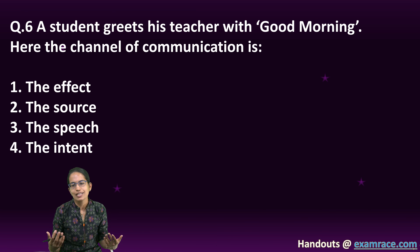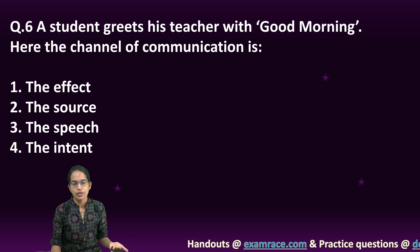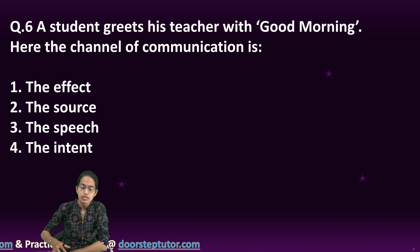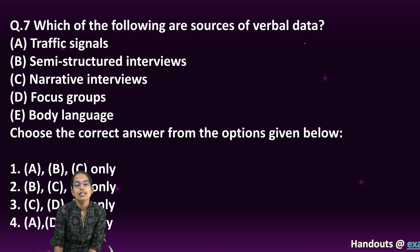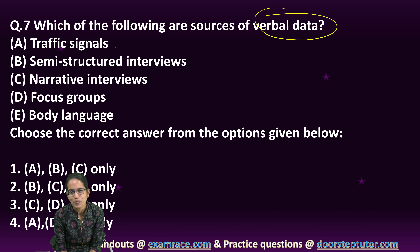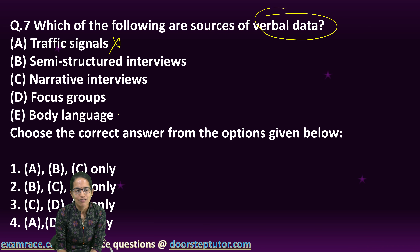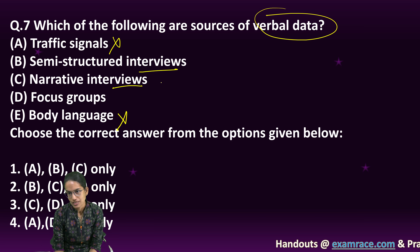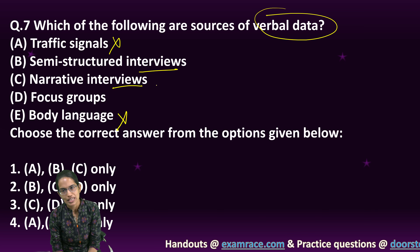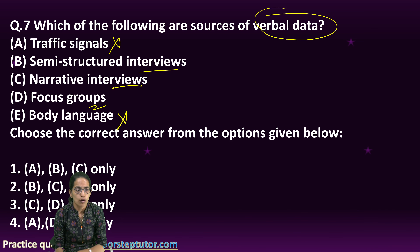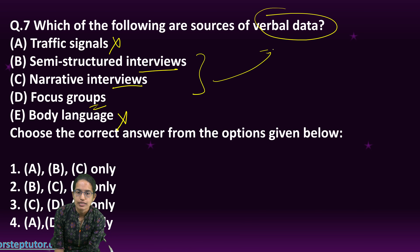The next question: a student greets the teacher saying 'good morning' — the communication channel here is speech, a verbal communication. The next is about sources of verbal communication. Traffic signals don't speak — they just change colors, so that's not verbal. Body language also doesn't speak, so it's not a verbal symbol. But any type of interview — narrative, structured, semi-structured, or unstructured — requires verbal communication between interviewer and interviewee. A focus group approach, where all are discussing one common issue, is also verbal. So B, C, and D are examples of verbal data.